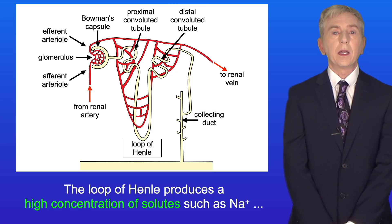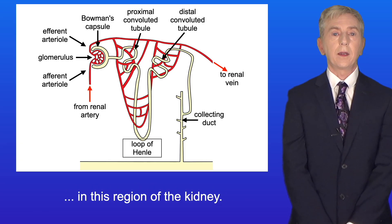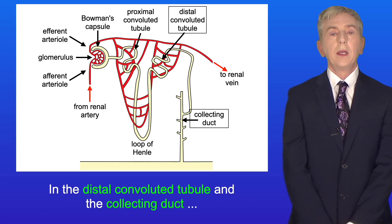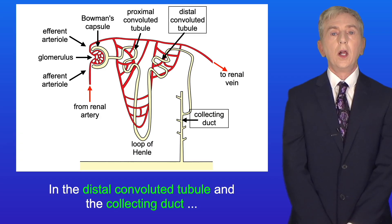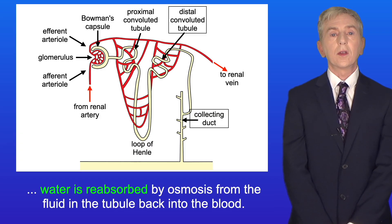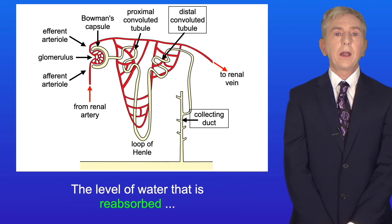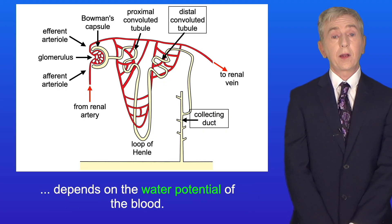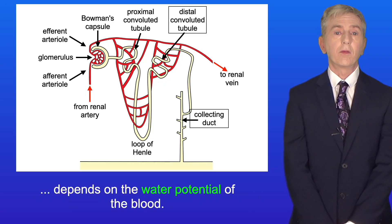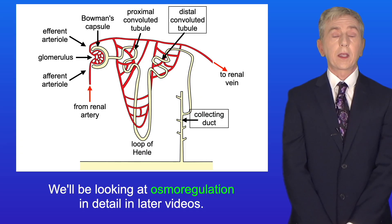The loop of Henle produces a high concentration of solutes such as the sodium ion in this region of the kidney. In the distal convoluted tubule and the collecting duct, water is reabsorbed by osmosis from the fluid in the tubule back into the blood. The level of water that's reabsorbed depends on the water potential of the blood, and we'll be looking at osmoregulation in detail in later videos.